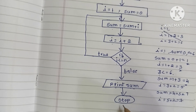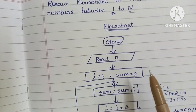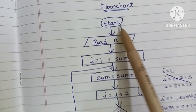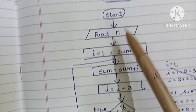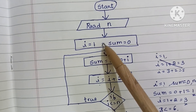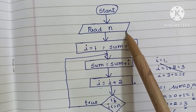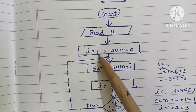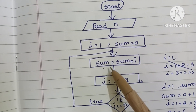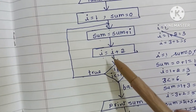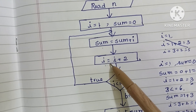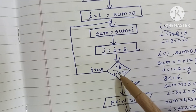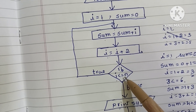This is the algorithm to find the sum of odd numbers between 1 to N. We write the start statement within an oval shape, then read N within a parallelogram shape. Next we declare i = 1 and sum = 0, then compute sum = sum + i, then increment i = i + 2 — all within rectangular shapes.